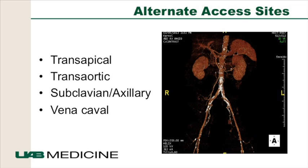If we are unable to use the aorto-iliac arteries due to narrowing, small size, or calcification, other access sites would be a transapical approach, a trans-aortic approach, a subclavian or axillary approach. Some people have described a vena-caval approach where the valve is delivered from the IVC across the atrial septum using a transseptal approach, brought into the left atrium, across the mitral valve, and anterograde across the aortic valve — quite cumbersome but used when no arterial access is available.